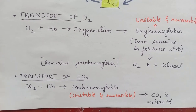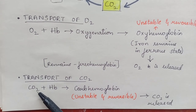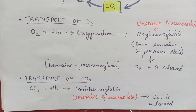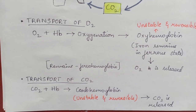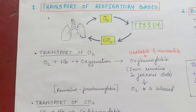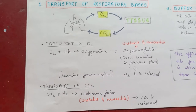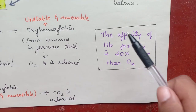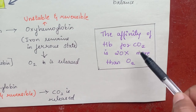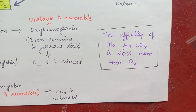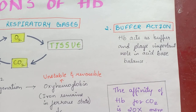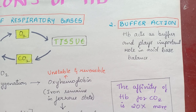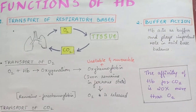Transport of carbon dioxide: when carbon dioxide binds with hemoglobin, carbhemoglobin is formed, which is again unstable and reversible, and carbon dioxide is released. The affinity of hemoglobin for carbon dioxide is 20 times more than for oxygen. Second, buffer action: hemoglobin acts as a buffer and plays an important role in acid-base balance.